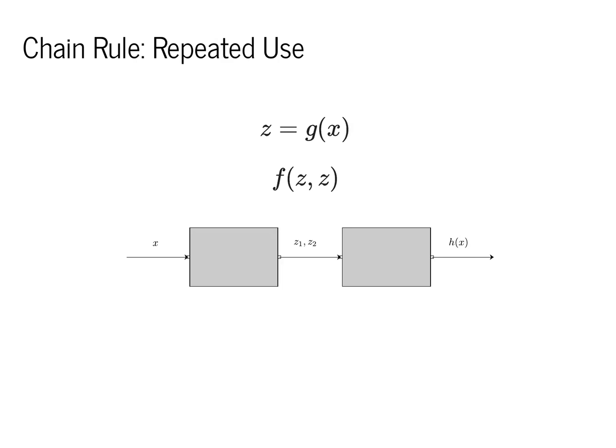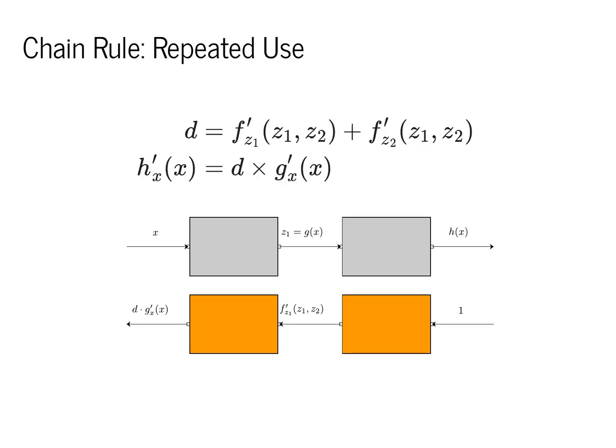We covered some more complex cases as well last lecture, such as where the first box produces a single output which is then used multiple times downstream. The main thing you need to know is that we sum up the derivatives on the backward pass.